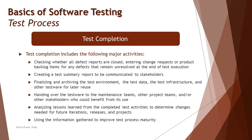Exit criteria include thoroughness measures such as coverage, the defect rate or defect open rate you should have, execution coverage, requirement coverage to be achieved, and specific non-functional parameters that should be met. Once we achieve the exit criteria, we move into the next phase: test completion.